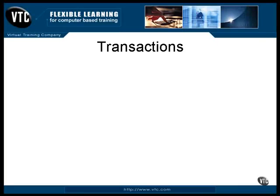A transaction is a collection of separate operations that go together to perform one larger operation. For example, you may want to sell an item by reducing the count of the available inventory, adding it to a shipping list, issuing a bill to a customer, and possibly a few other things here and there. All of these operations go together to make one transaction.